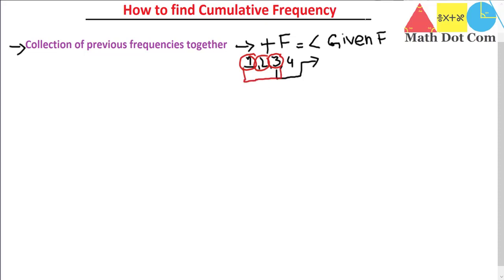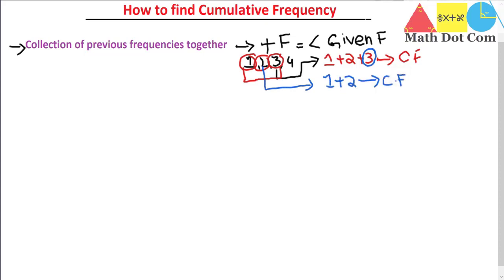So it's better to define it like this: the cumulative frequency at 3 equals 1 plus 2 plus 3, while the cumulative frequency at 2 equals 1 plus 2. In summary, the cumulative frequency is the sum of the frequency of that score plus all the frequencies below it. This is the basic concept behind cumulative frequency.